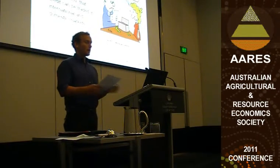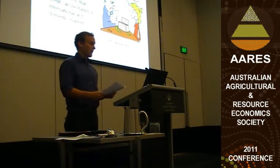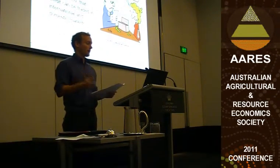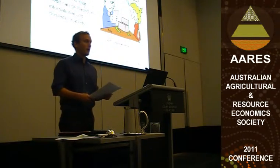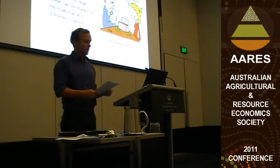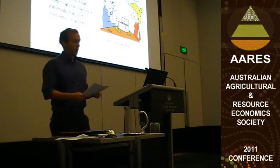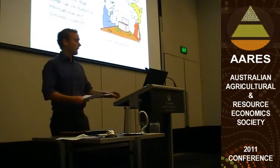Starting at the very beginning: what is an offset? Basically, it's a permit that is generated through sequestration or abatement activities and, once verified, can be traded to an emitter or otherwise in domestic and international markets. In this way, offset permits represent new income streams for Australian landholders.